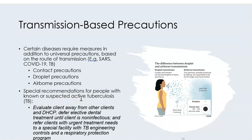If a client has active tuberculosis (TB), we cannot treat them because they are very contagious. If they have urgent dental treatment needs, there are special facilities with respiratory protection programs that can accommodate them. A regular dental office may not be equipped to handle active TB cases, so we would refer them to a TB isolation facility.